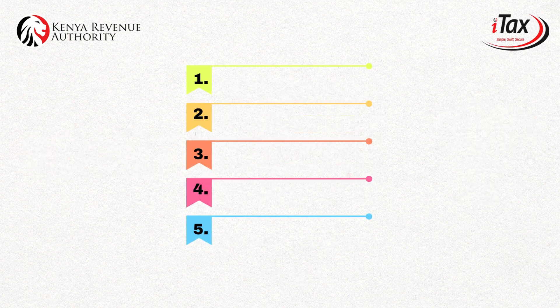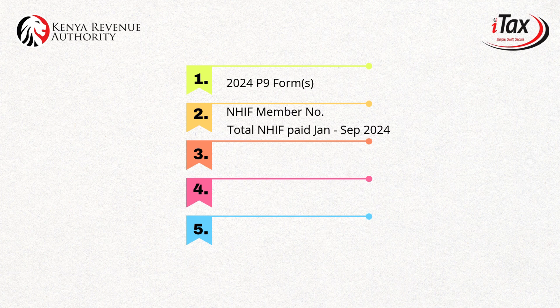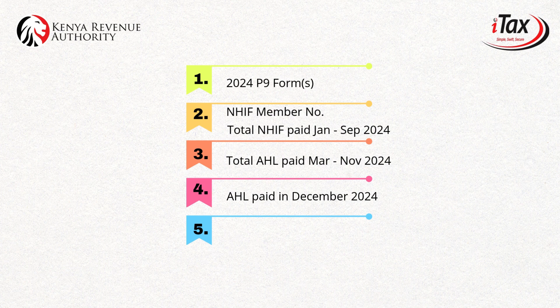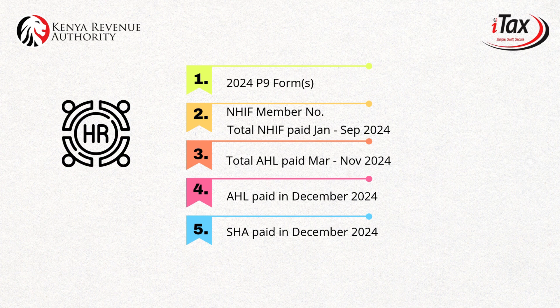Before we start you need to be armed with five critical pieces of information. One, your P9 form from 2024 with all your salary data. If you had more than one employer in 2024, get a P9 form from each one of them. Two, your NHIF membership number and total NHIF premiums paid from January to September 2024. Three, your total affordable housing levy paid from March to November 2024. Four, your affordable housing levy paid for the month of December 2024. And five, your SHIF deduction for the month of December 2024. You can ask your HR person for this information if they're nice, or calculate this data from your payslips.